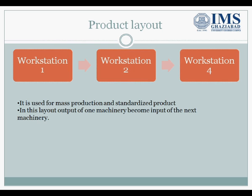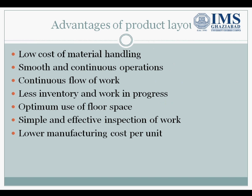The output of one machine becomes the input for the next machine. It requires very little material handling and is basically used for mass production of standardized products. The product goes from the first workstation to the second, third, and fourth workstation. Once the raw material enters the conveyor, it gets converted into the final product.